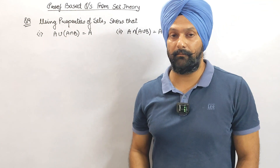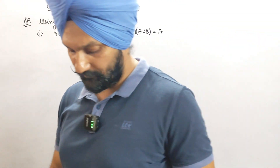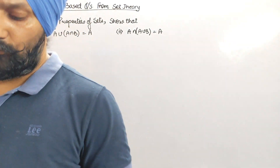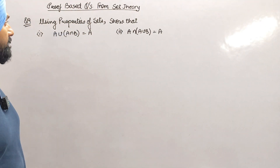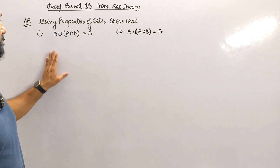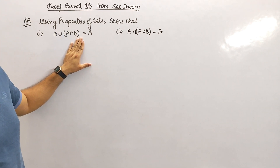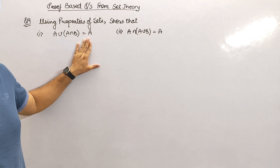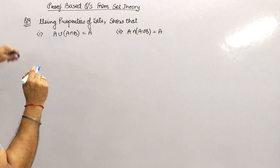Here students, question number 9 — property based questions. What it says: using properties of sets, show that A union A intersection B is A. I am going to do this thing with a Venn diagram.